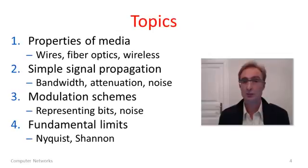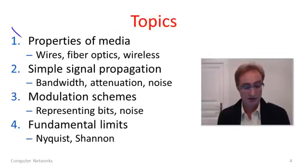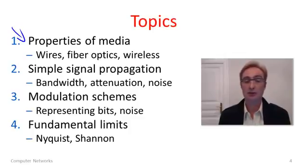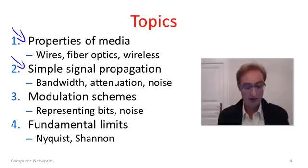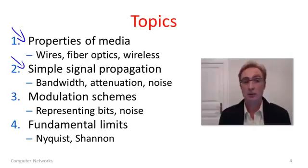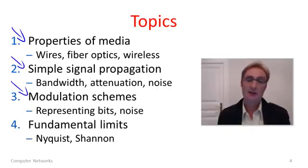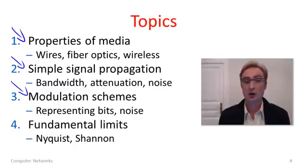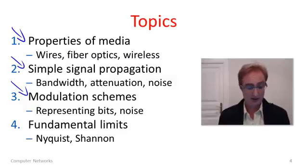To understand how this whole process works, we're going to go through several topics. First, I'll talk about the different kinds of media and their properties — different kinds of wires, wireless medium, fiber optics and so forth. Then I'll talk about how signals propagate over these different media, introducing concepts such as bandwidth and attenuation of signals. Equipped with that learning, we'll get to the heart of the physical layer: how to represent bits using signals. These schemes are sometimes called modulation schemes — how to encode bits.